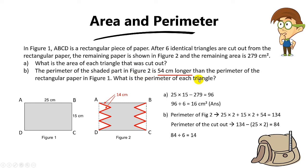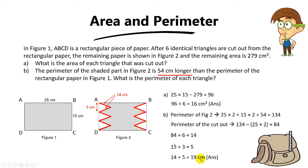They want the perimeter of each triangle. The perimeter will be 14 plus the base length. We know that base length is 5cm, because 15 divided by 3 equals 5. So the perimeter of each triangle is 14 plus 5, and the answer is 19cm.